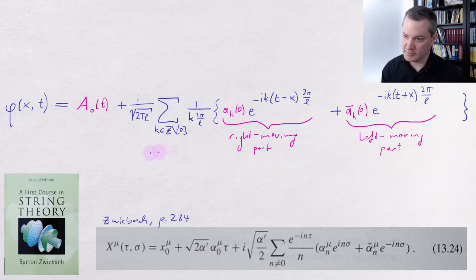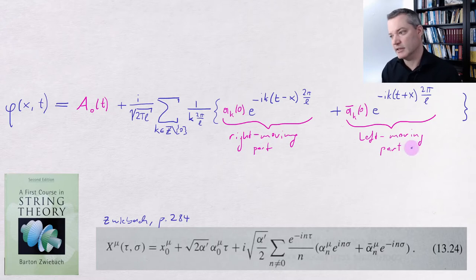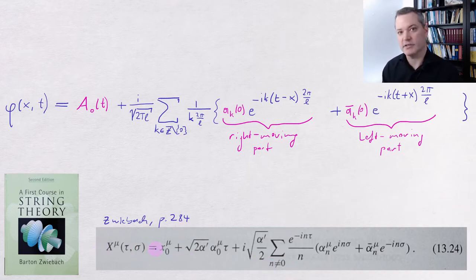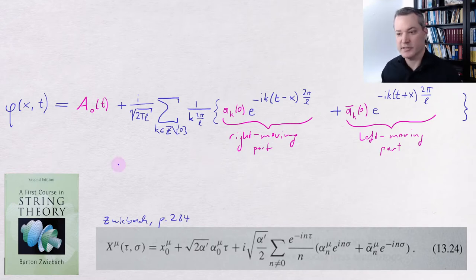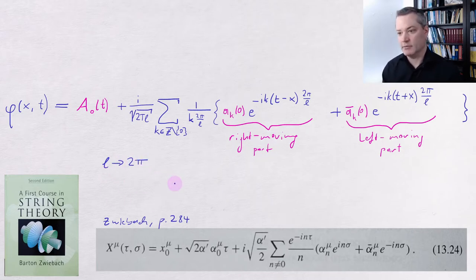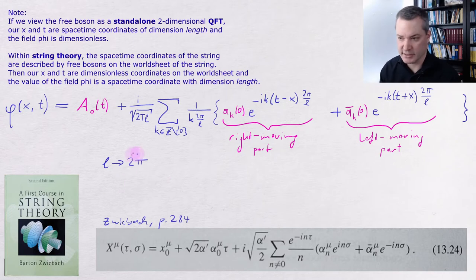For example, our expansion of the field in terms of right moving and left moving modes that we ended up with last time is exactly the same as the formula in Zwiebach's book for the mode expansion of one of the coordinates of the bosonic string, with only a few minor changes in notation. First, as is usual in closed string theory, Zwiebach sets the spatial period L to 2π, which makes sense because in string theory the x-coordinate is a dimensionless coordinate on the worldsheet, so it can be set to a dimensionless number like 2π, getting rid of all these annoying factors of 2π over L.